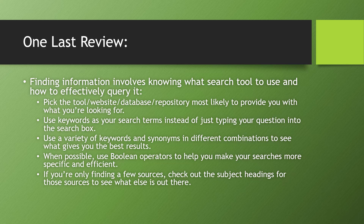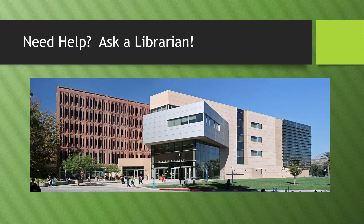Finding information involves knowing which search tool to use and how to effectively query it. You do this by picking the tool — a website, database, or repository — most likely to provide what you're looking for; using keywords as your search terms instead of typing your full question; using a variety of keywords and synonyms in different combinations; using Boolean operators to make your searches more specific or efficient; and checking subject headings if you're only finding a few sources. As this can be complicated, you can always ask a librarian for assistance — we're happy to help you navigate the variety of information tools available.